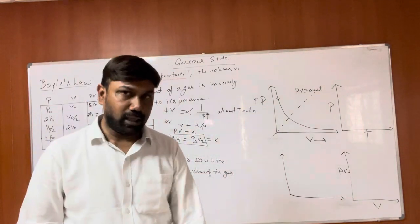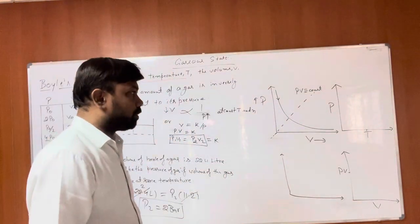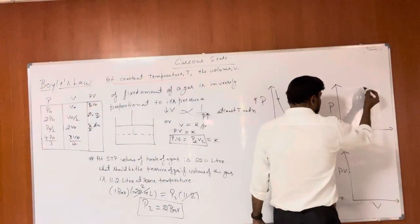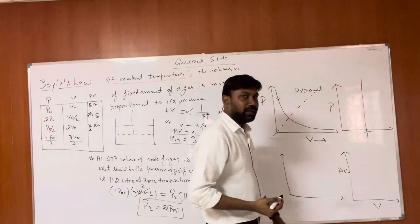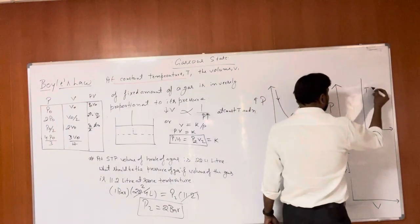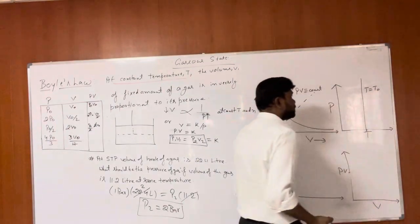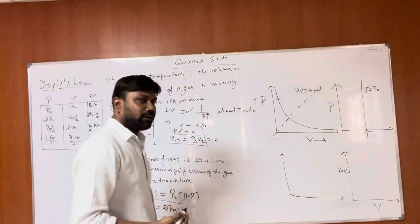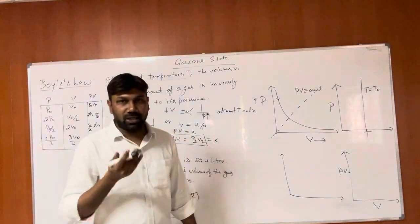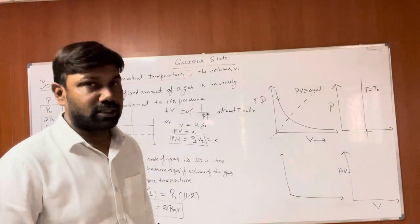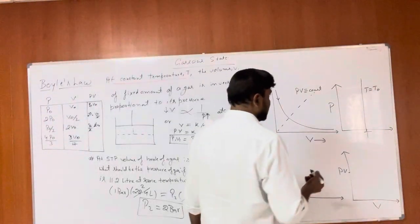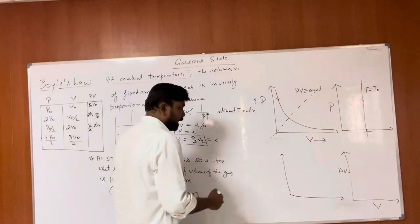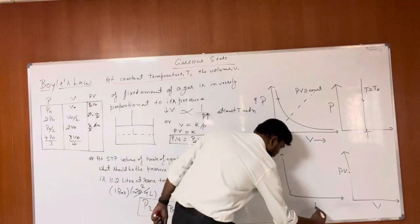Next graph: if we talk about pressure and temperature in Boyle's law, for the entire range temperature will remain constant at T0. Whatever the pressure is, whether it increases or decreases, temperature will not change. So it is a straight line, a vertical straight line.